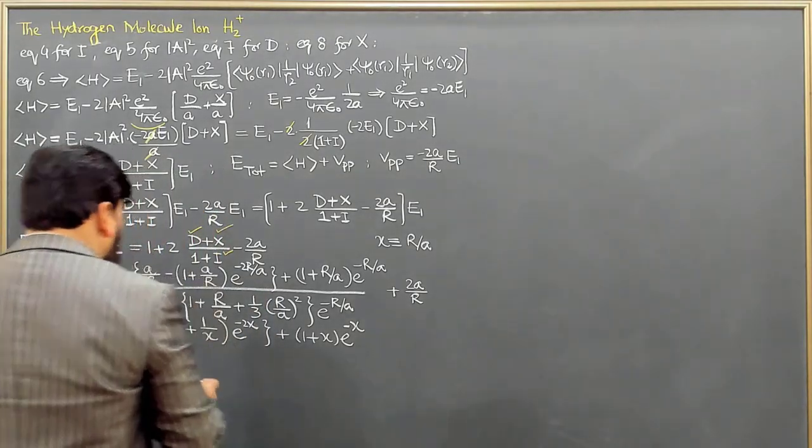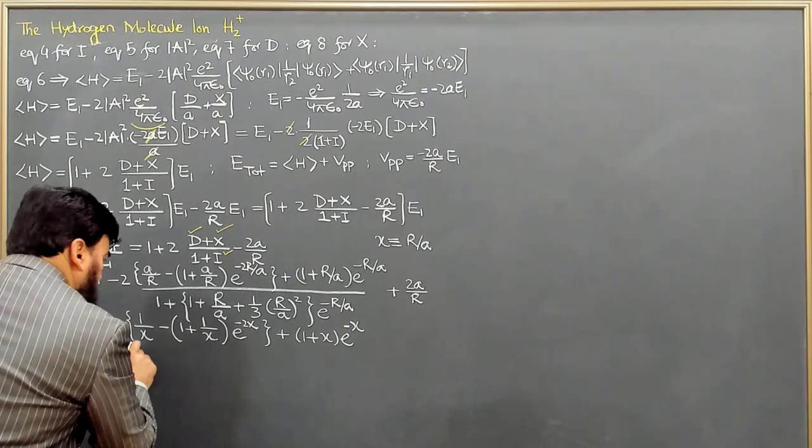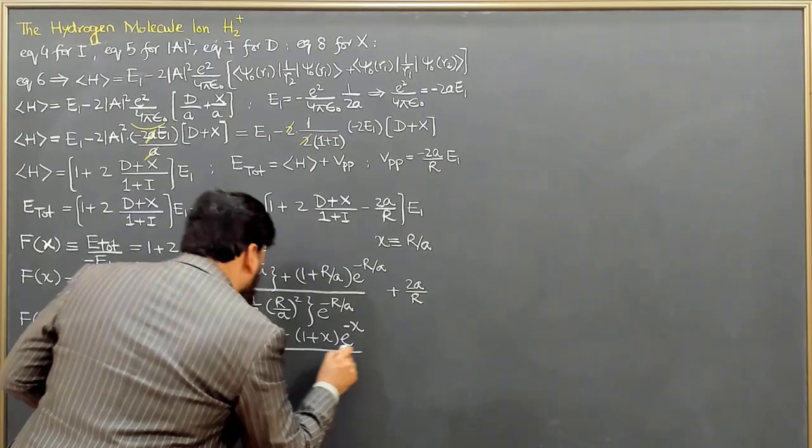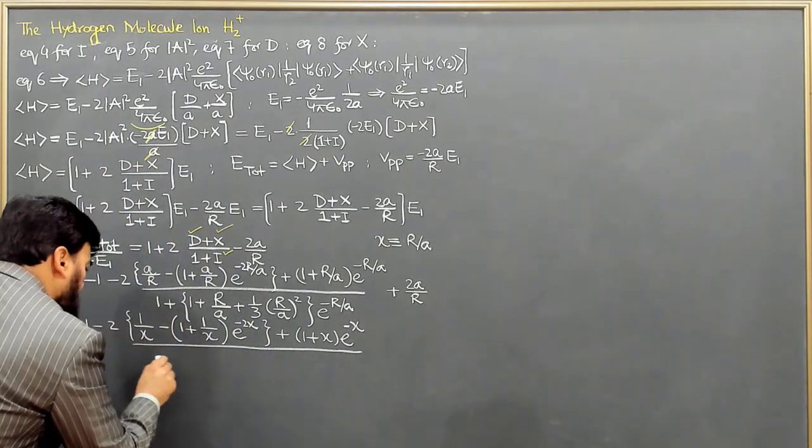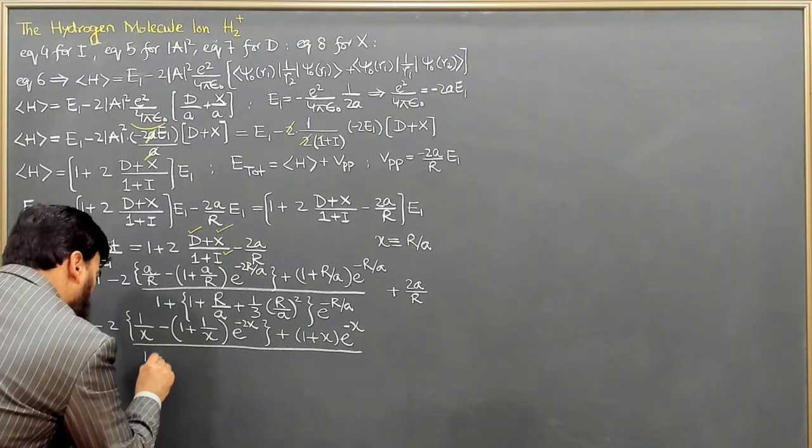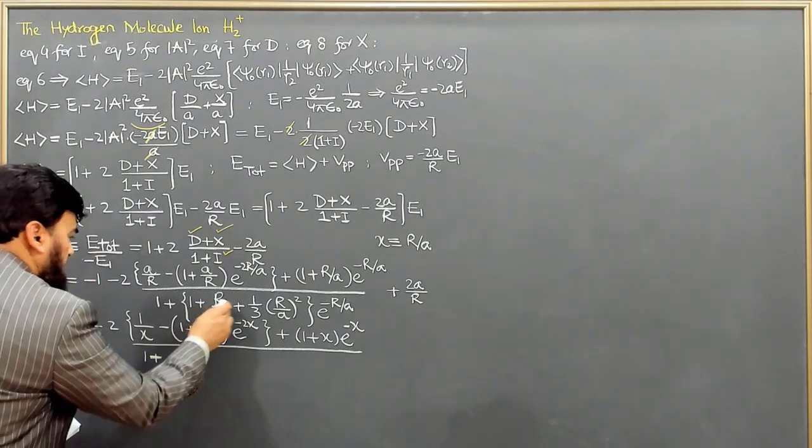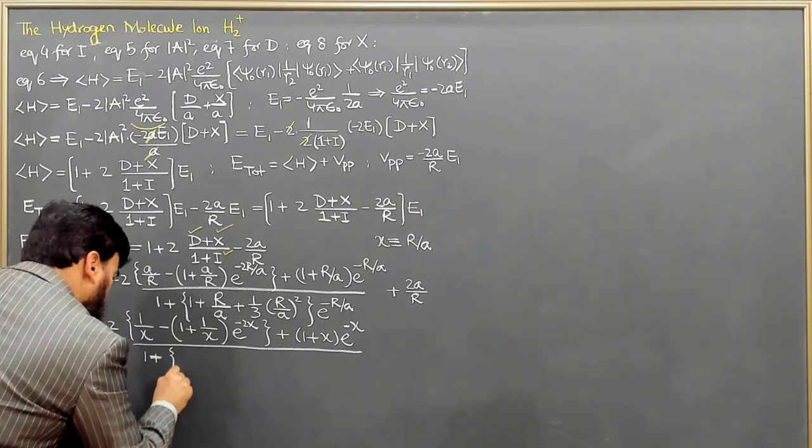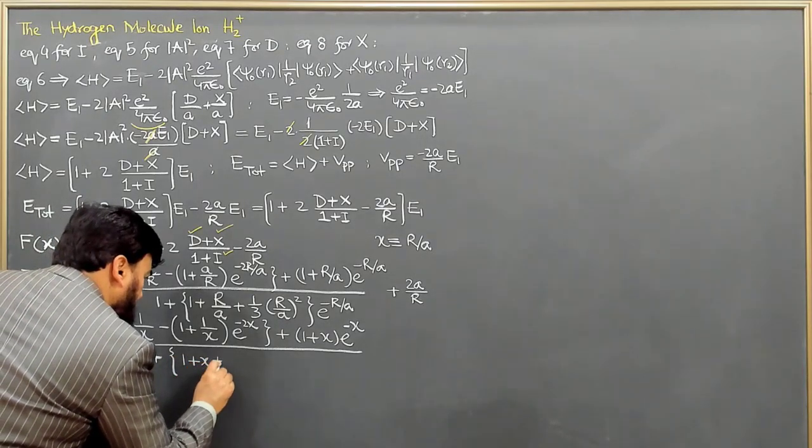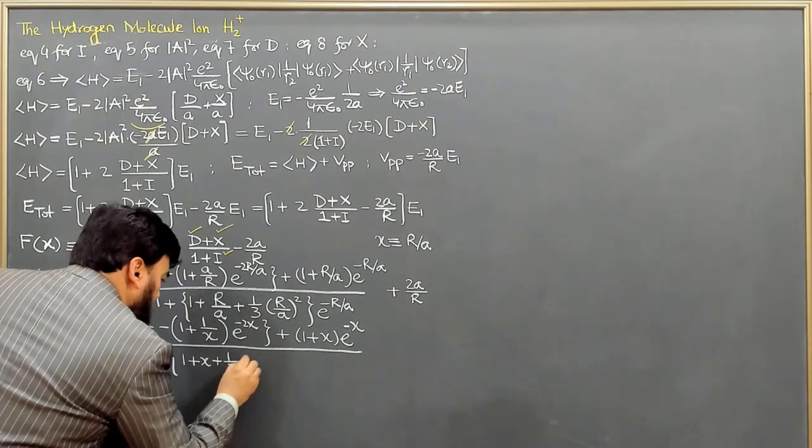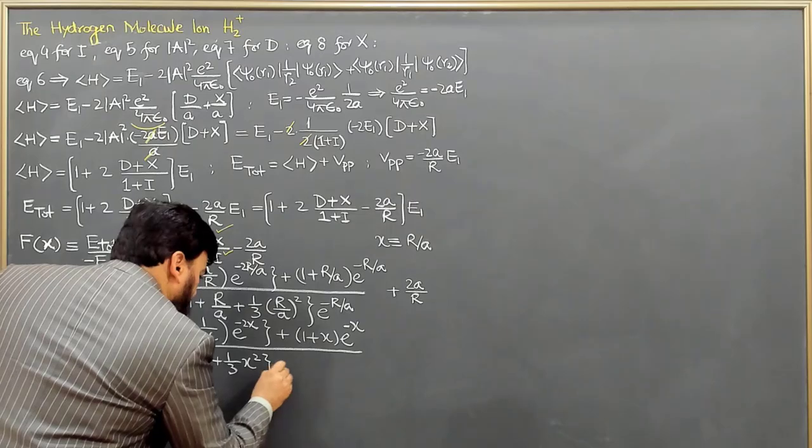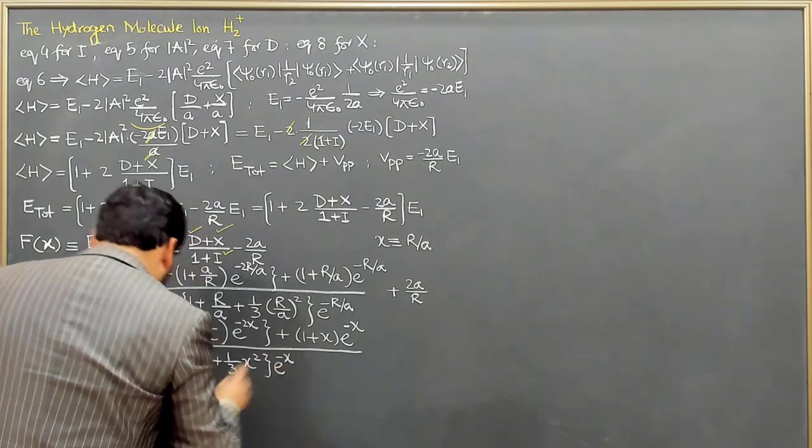Then this term, the denominator term, will be equal to 1 plus 1 plus 1 plus r over a, so this is 1 plus x plus 1 over 3 x squared and e to the power minus x.